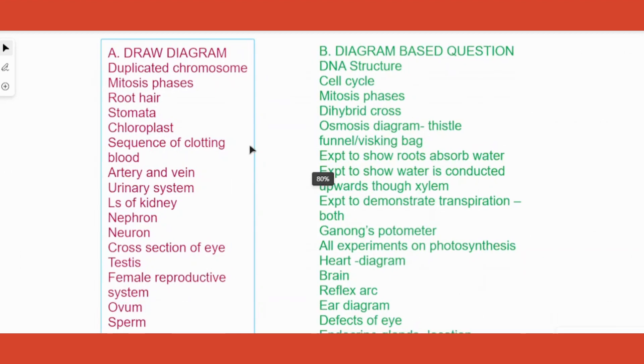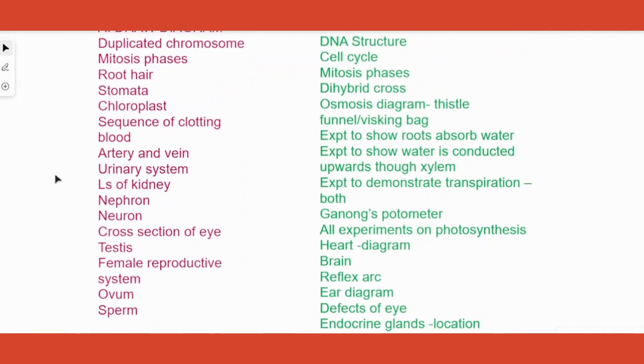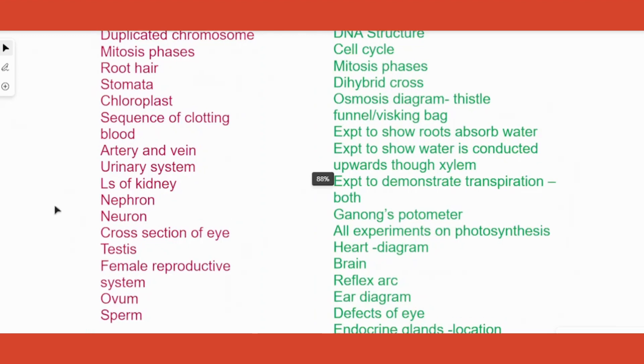Sequence of clotting of blood they'll ask you to write it down but that also can be considered as a draw diagram so I've included that. Artery and vein again repeated question, urinary system, the complete system wherein you draw kidney, ureter, bladder everything, LS of kidney repeated question, nephron can come, neuron repeated question, cross section of eye has come.